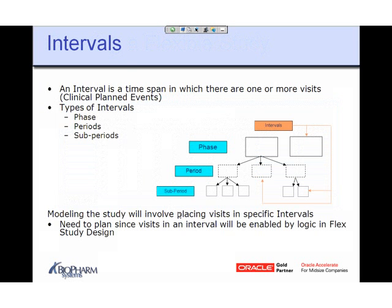Let's talk about intervals. An interval has always existed in Oracle Clinical but was never really used very much — it was typically not used. An interval is basically a span of time in which there will be one or more visits or clinical planned events. However, they are now used very heavily within RDC version 4.6 for flexible studies. There are three types of intervals: phases, periods, and subperiods. Note that 'phase' here is not Phase 1, 2, 3 of a clinical study — it's simply a label type for an interval.